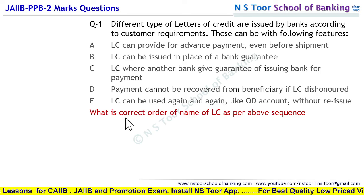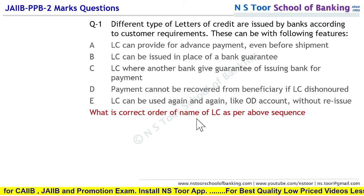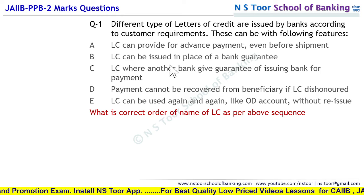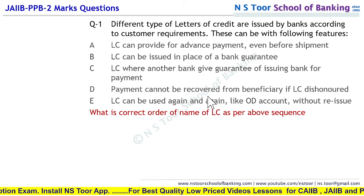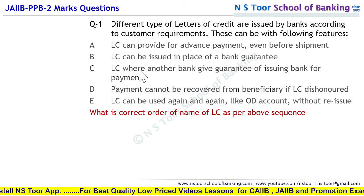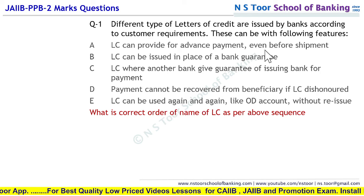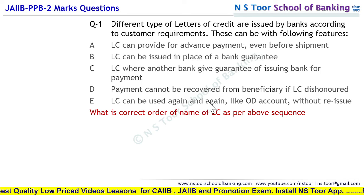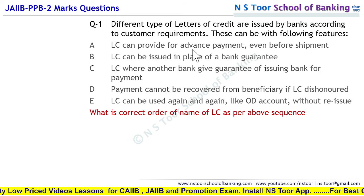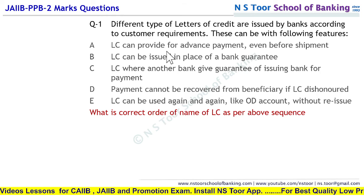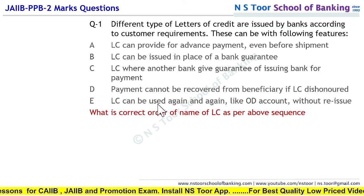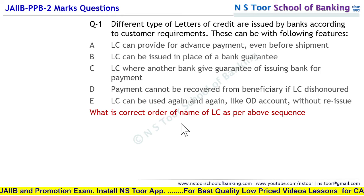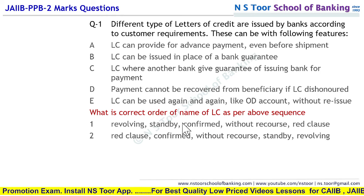Humne is mein batana hai: what is the correct order of names of LCs as per the above sequence? Yaahan pe jo sequence diya hua hai, us sequence ke mutabik yeh alag-alag letter of credit ke features hain — yani yeh 5 alag-alag type ke LCs hain, to inke alag-alag naam hain. Humne A, B, C, D, E ke naam likh ke unka proper sequence banana hai. Ye humare option answers hain.